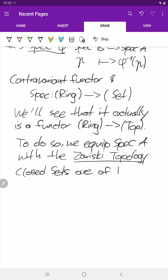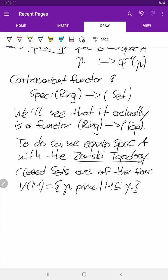We'll later see that closed sets satisfy the conditions of a topology. Closed sets are of the form V of M. V stands for vanishing. And we'll see the motivation shortly, why it's called vanishing. We take the prime ideals such that M is a subset of the prime ideals. The prime ideals are basically the points in our topological space. And M is any subset of A.